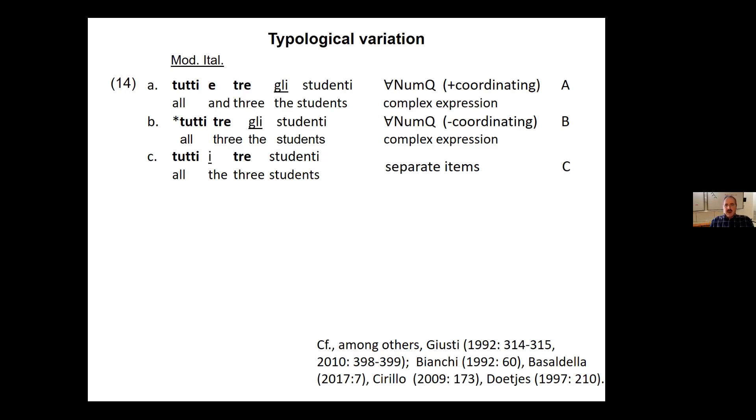And there is some typological variation in and without the Romance languages. Let's just focus on the Romance languages. Essentially, we have these three types. The first one is a coordinating type with AND, TUTTI e tre, which essentially is Italian. Then we have the same word order, but without this coordination, which is not possible in Italian, TUTTI tre gli studenti, with the article following the numeral.